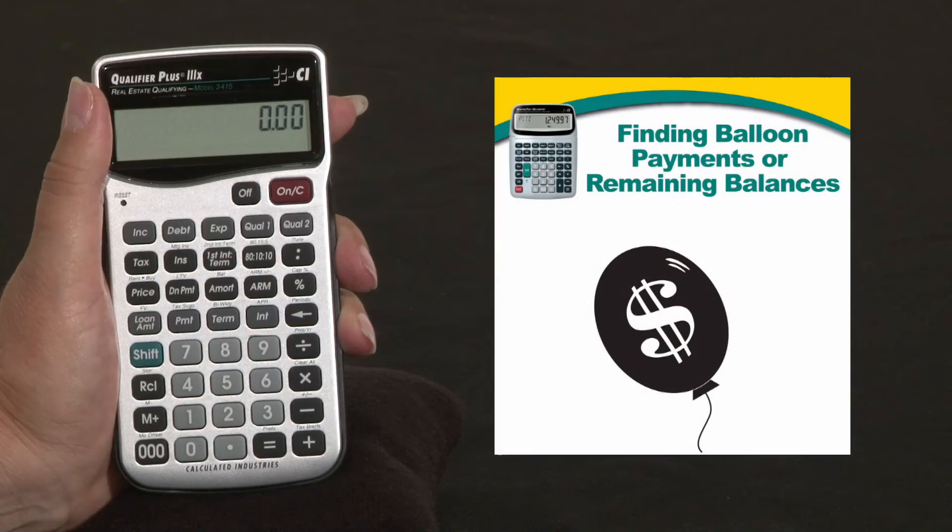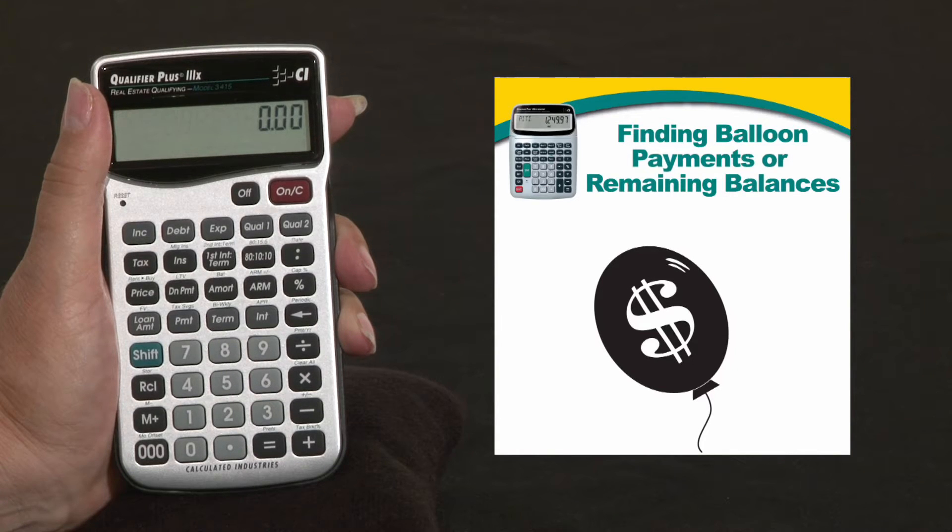With the Qualifier Plus 3x, desktop and FX, we also have the ability to find a balloon payment or remaining balance.